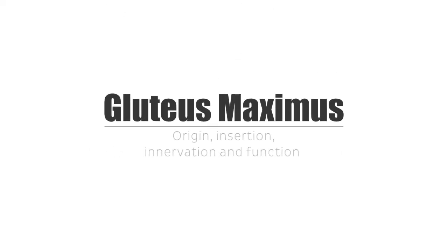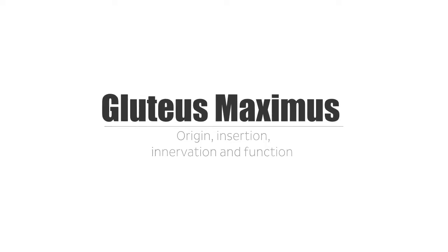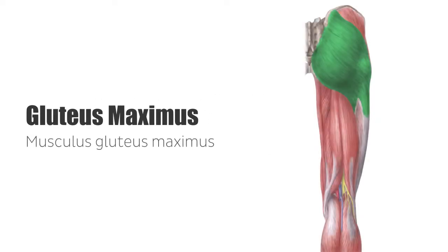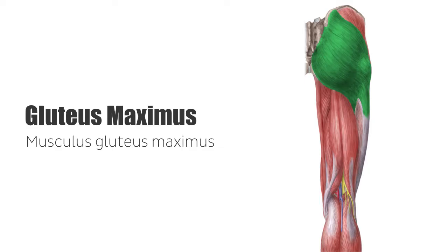Hey everyone, it's Matt from KenHub, and in this tutorial we will discuss the origin, insertion, innervation, and function of the gluteus maximus. The gluteus maximus muscle builds the most superficial layer of the dorsal gluteal musculature and so forms the surface anatomy of the gluteal region or buttocks.